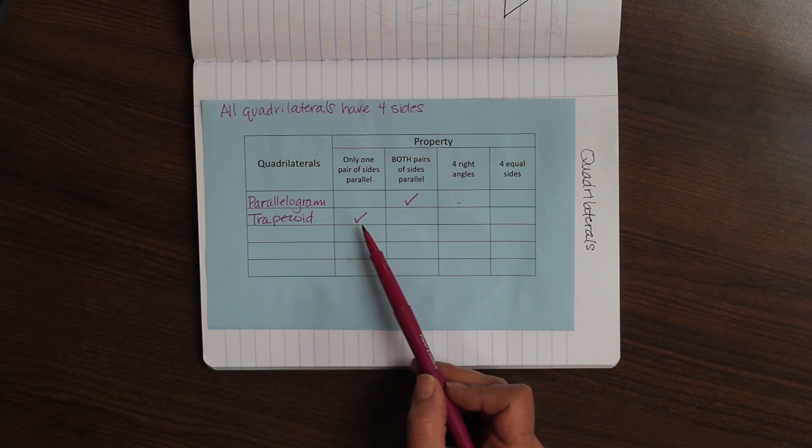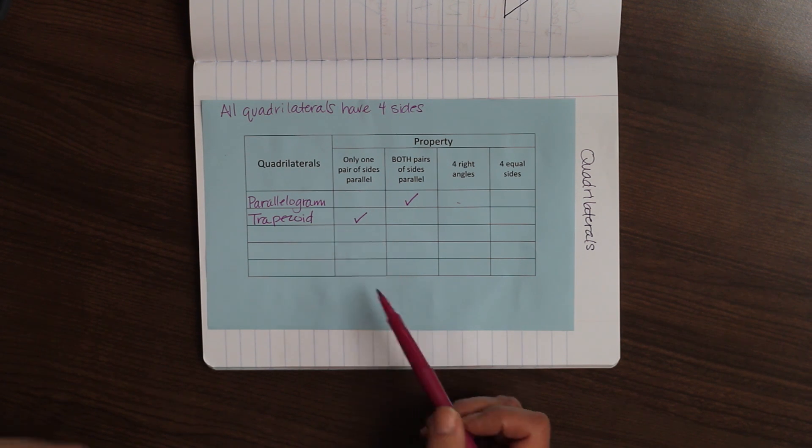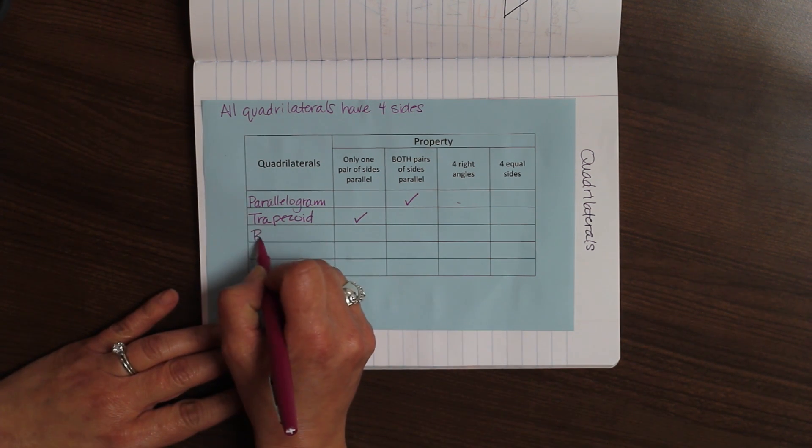They don't have right angles and they don't have equal sides necessarily. So, the only property of the trapezoid that we need to be worried about is that only one pair of sides is parallel.